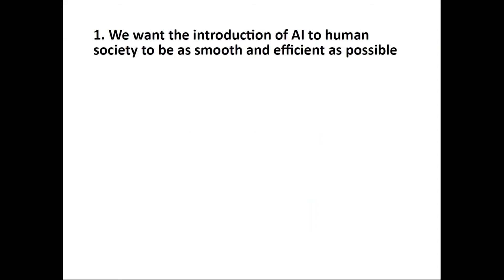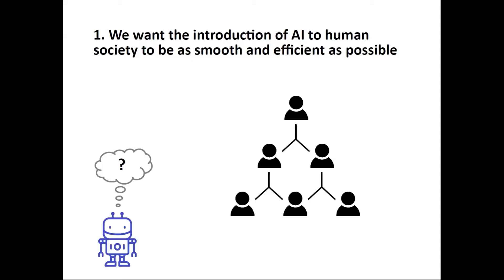The first reason is that we want the introduction of AI systems to our society to be as smooth and efficient as possible. Suppose a machine — an intelligent agent — is trying to learn what to expect from humans in social interactive settings by observing how humans behave amongst themselves. If a machine observes how humans behave and starts to build its expectations of how people will interact with it, those expectations won't necessarily be met when they actually enter our interactive scenarios.